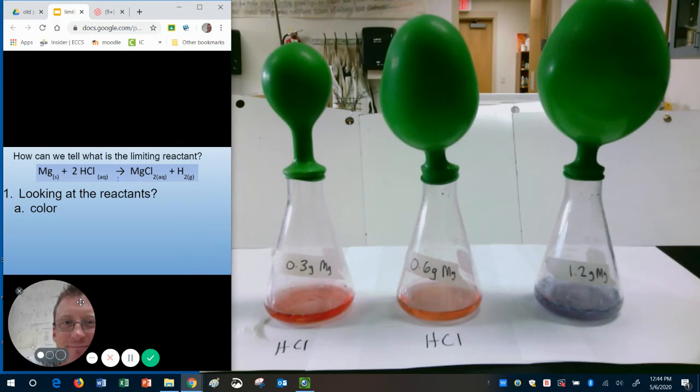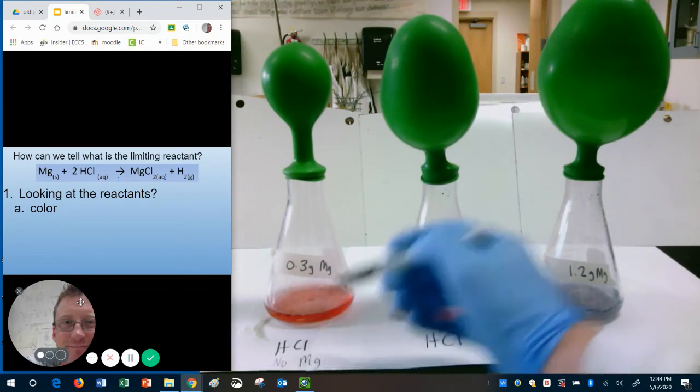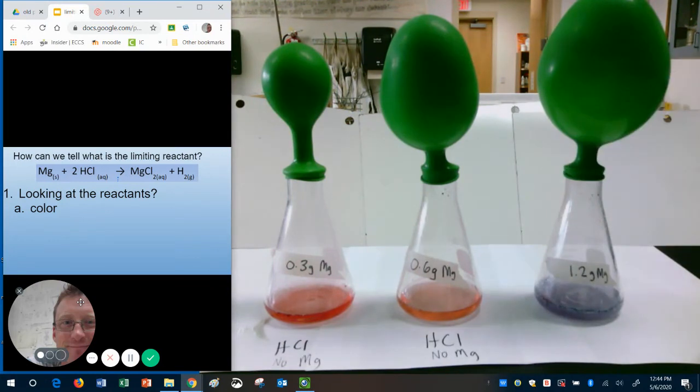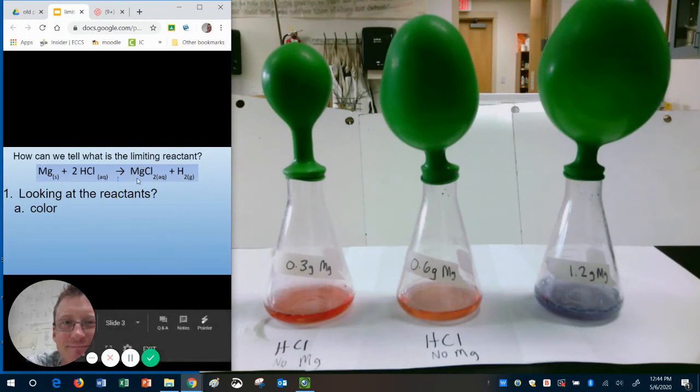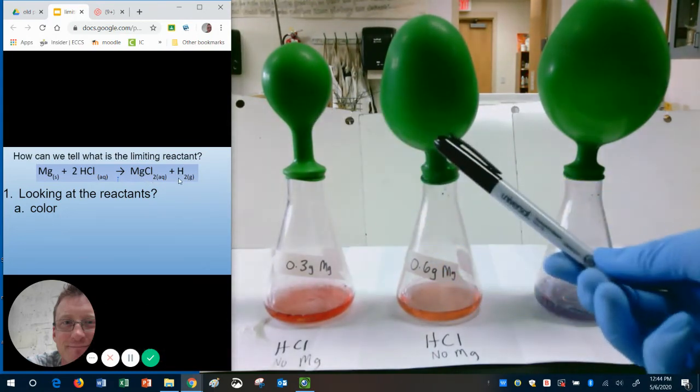What must have run out? Well, there must no longer be any magnesium powder. There is no more magnesium in either of those. Why? Because they turned into their products. We created magnesium chloride, which is colorless, and we created hydrogen gas. That's why the balloons inflated.